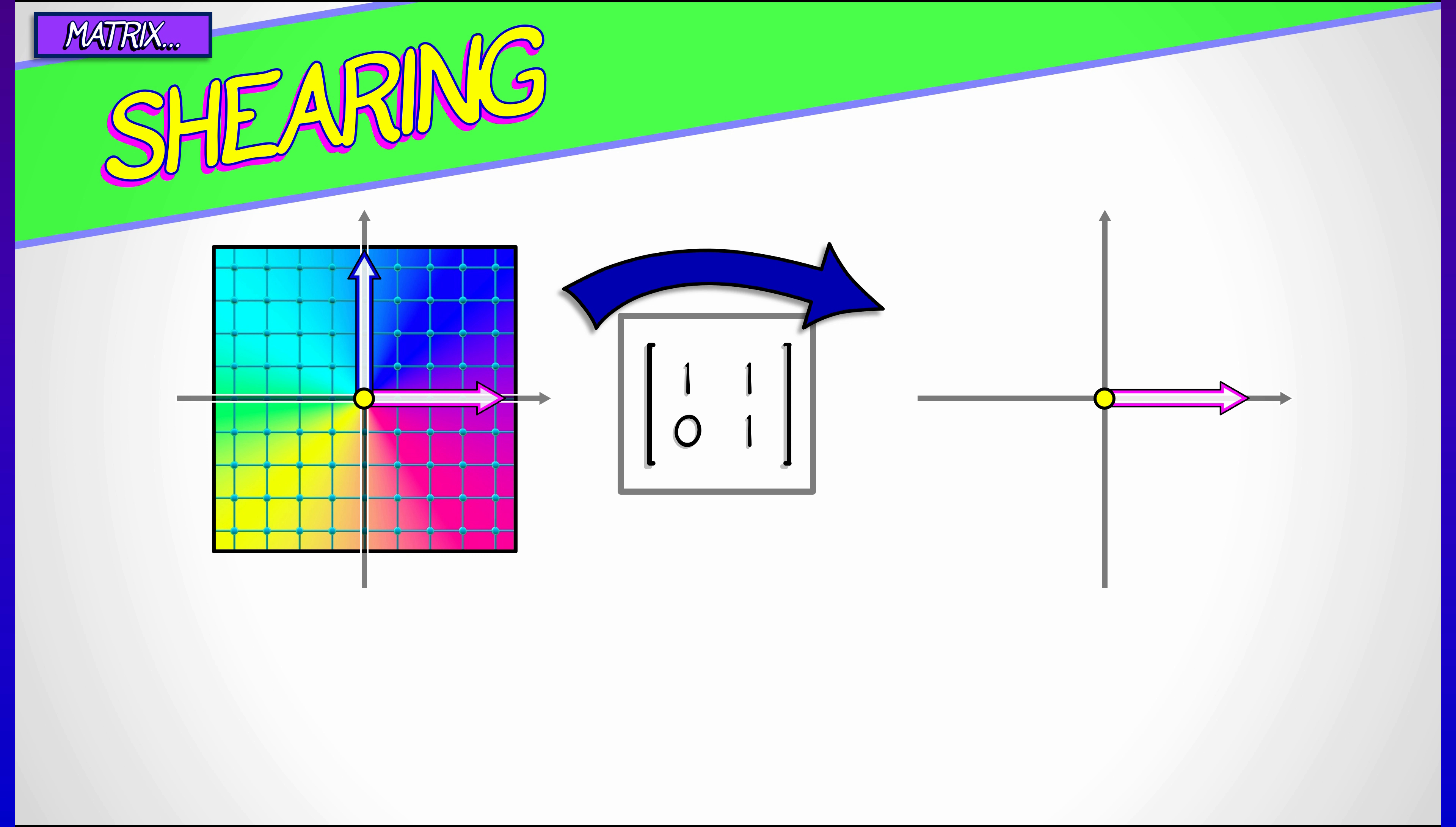Well, it takes the i vector, 1, 0, to the first column, 1, 0. It leaves horizontal components alone.